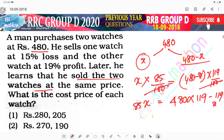So, if we add this, what happens? 119, 9, 5, 14, carry forward 1, 8, 9, 10 — 204x equals to 480 into 119.